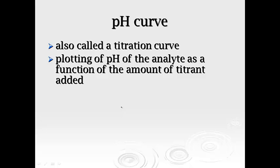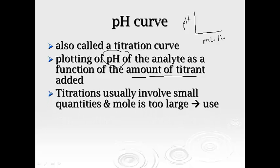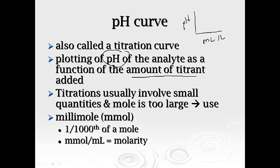A pH curve is also called a titration curve. It's a plot of pH versus the amount of titrant added. It's usually pH versus some type of volume, usually milliliters or liters or whatever we're adding in there. Titrations usually involve very small quantities, and typically the mole is too large, so we use millimole.